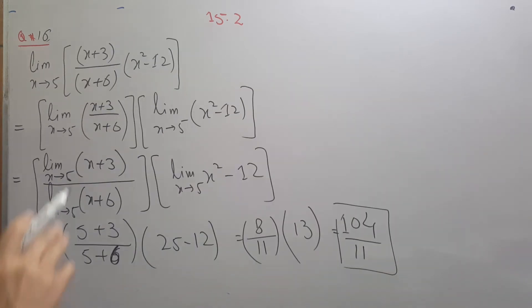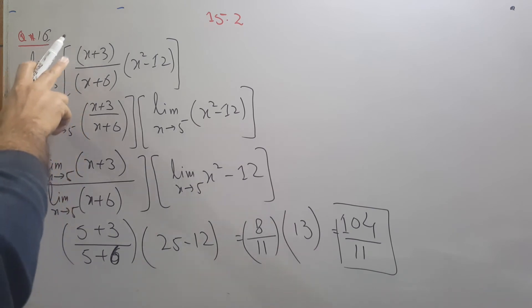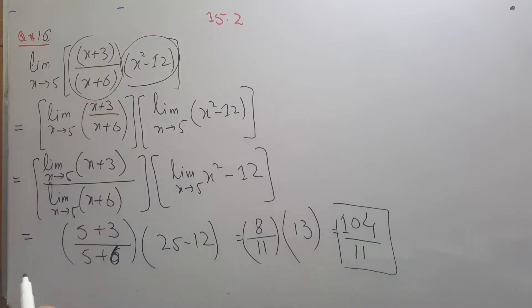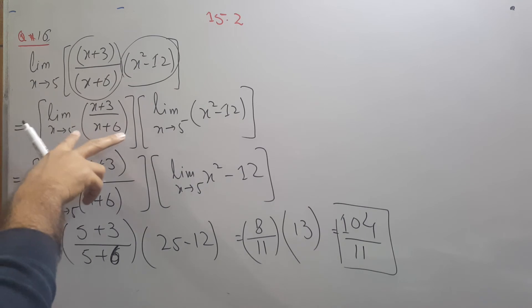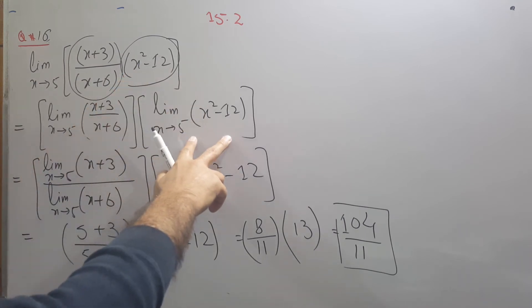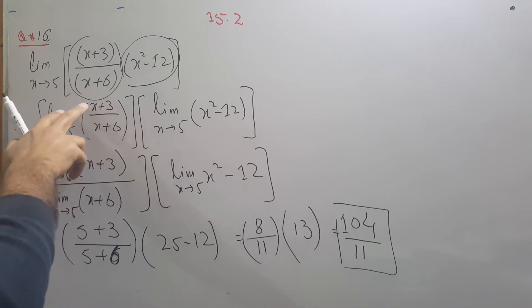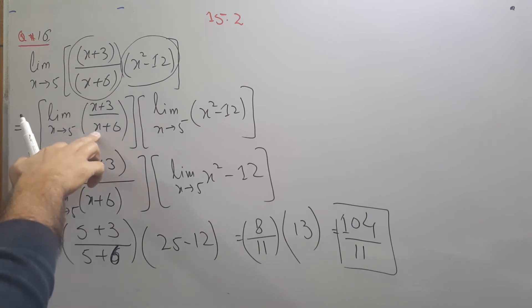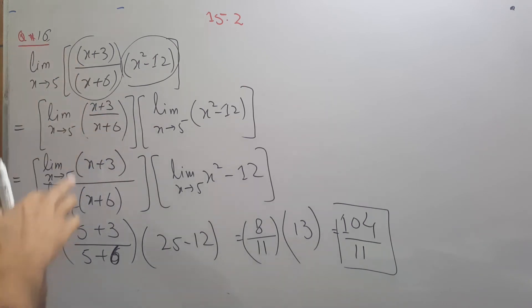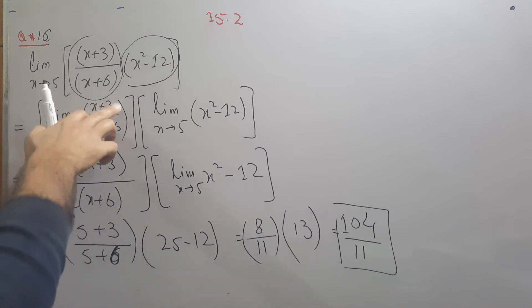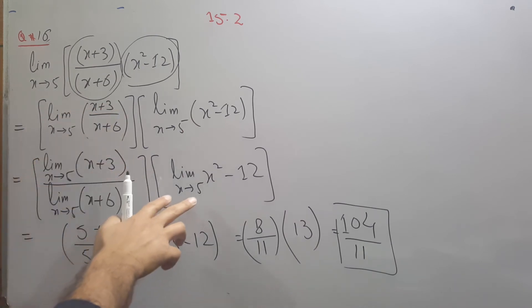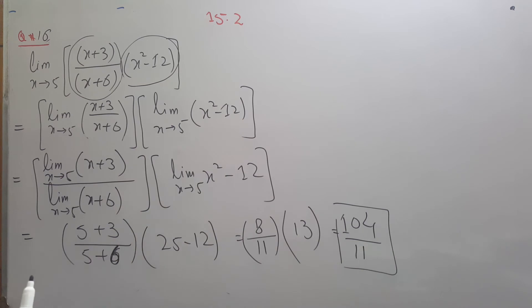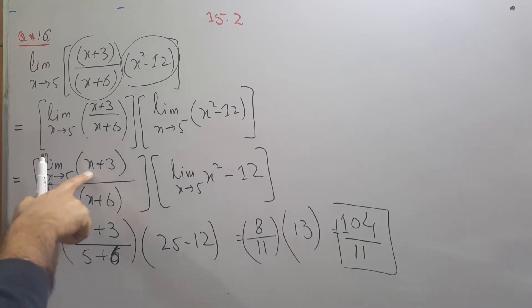Question number 16 is a bit more complicated. You have two functions multiplying, so first apply the product property: limit on the first function times limit on the second function. Each is in numerator over denominator form. Checking x equals 5 in the denominators — neither is 0 — so we can apply the limit above and below separately. For x squared minus 12, since 12 is a constant it gives minus 12 when the limit is applied.